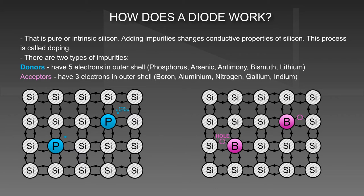There are two types of impurities. Donors have five electrons in their outer shell: Phosphorus, Arsenic, Antimony, Bismuth, Lithium.